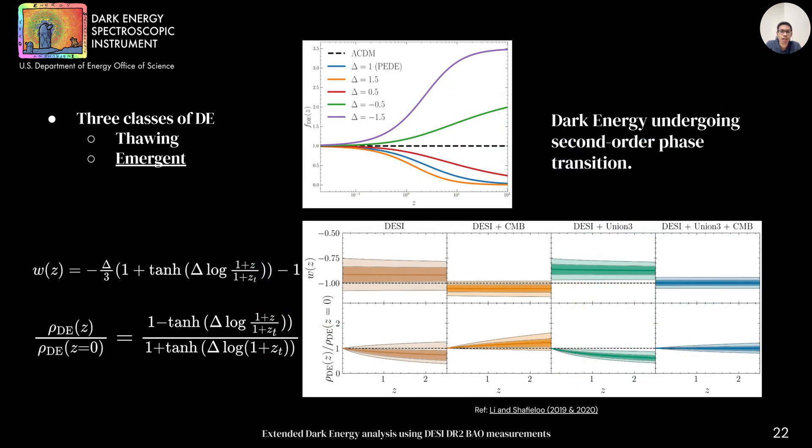Next, we consider an emergent class where dark energy density undergoes a second order phase transition. This kind of behavior can be captured using this parameterization shown on the left where delta captures how steep is the phase transition and zt is the redshift for matter dark energy equality. The results with different data combination DAISI, DAISI plus CMB, DAISI plus Union 3, and all three combined can be seen in the bottom plot.